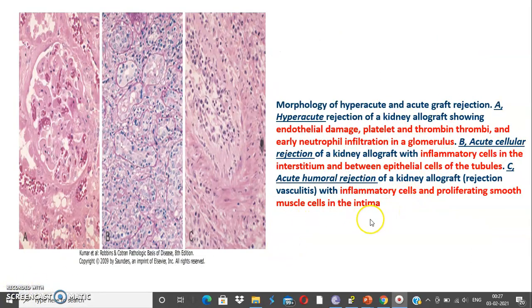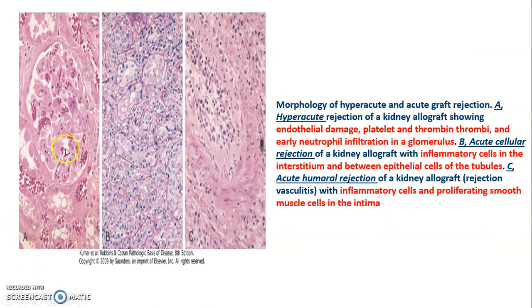Looking at the microphotographs: photograph A shows the morphology of hyperacute rejection of kidney allograft, with endothelial damage, platelet and thrombus formation, and neutrophilic infiltration in the glomeruli. In acute cellular rejection, there is a chronic inflammatory infiltrate. In acute humoral rejection, the blood vessel shows inflammatory cell infiltrate and smooth muscle cells in the intima.